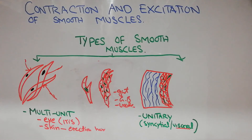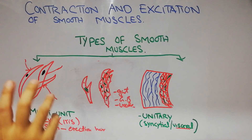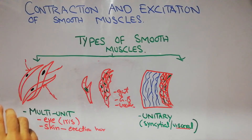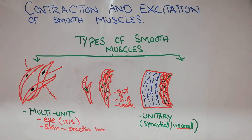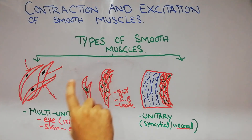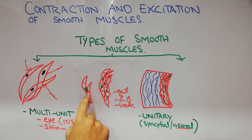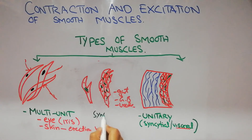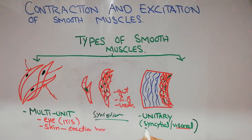Because stimulus spreads across the whole sheet, unitary smooth muscles contract as a single unit rather than behaving like multi-units. This property of spreading of stimulus from one smooth muscle fiber to another through membrane connections and gap junctions is known as syncytium. That is why they are also known as syncytial smooth muscles.